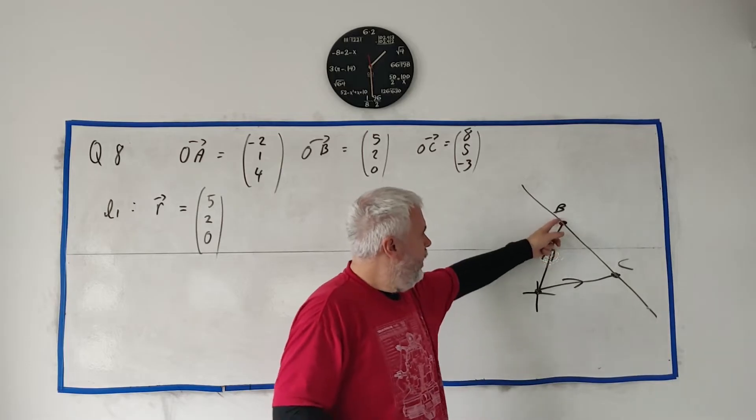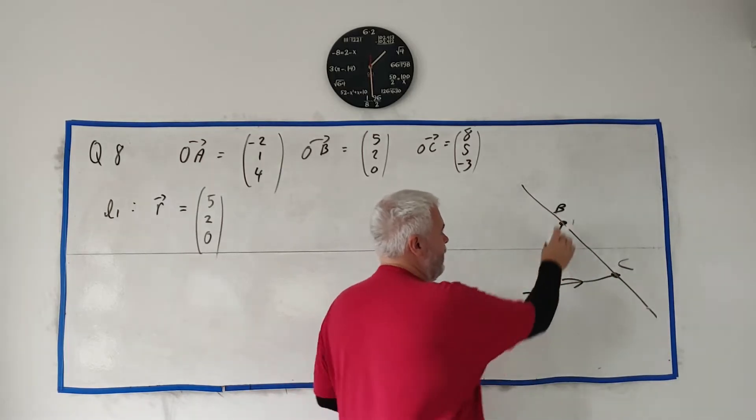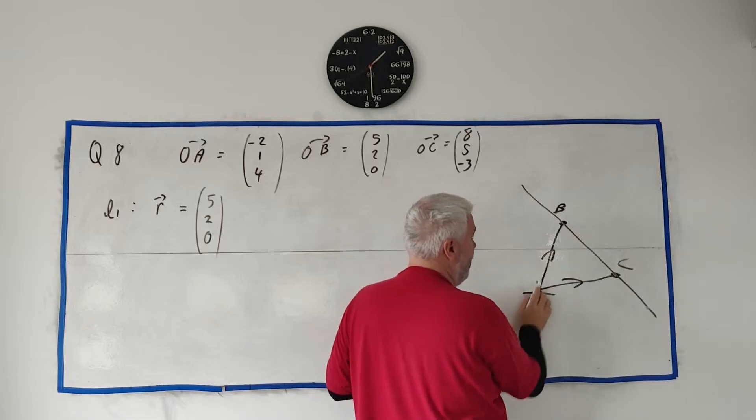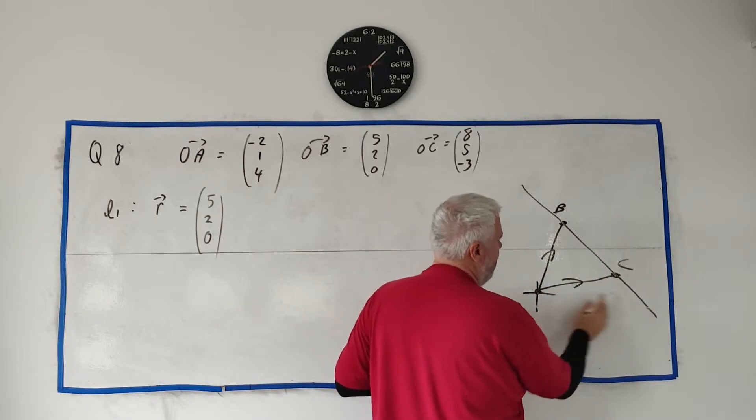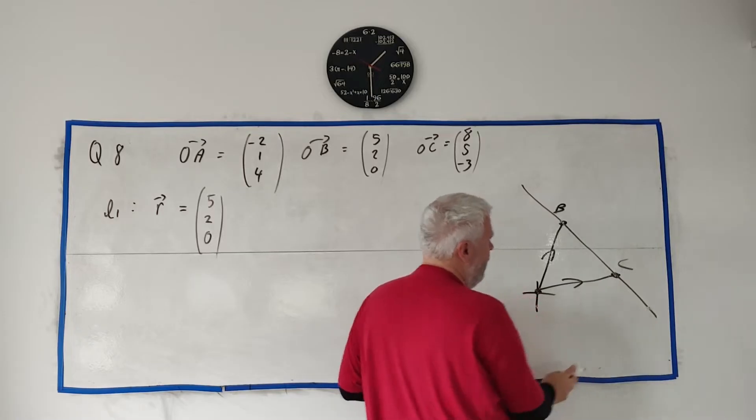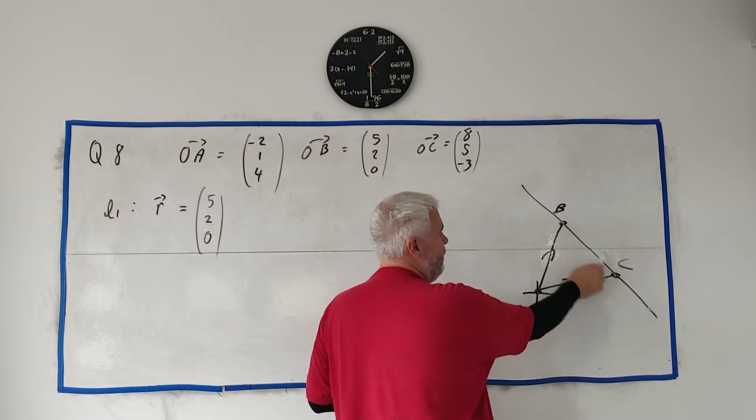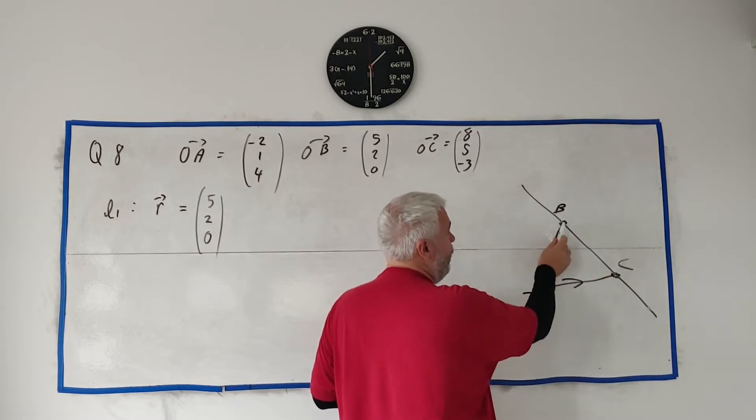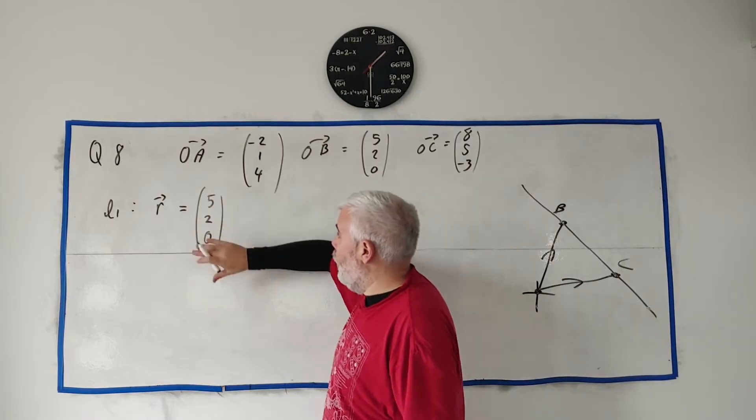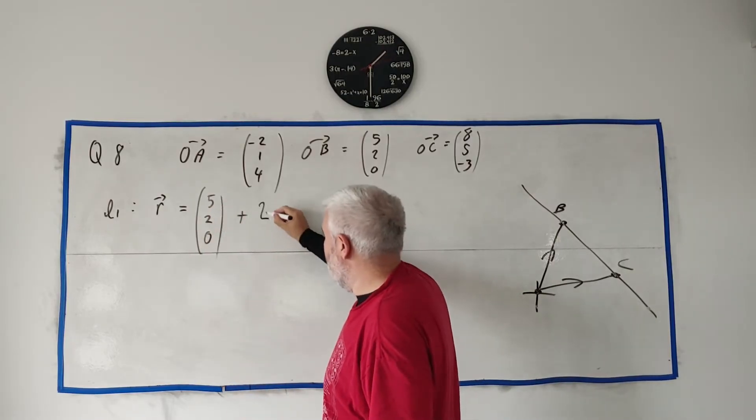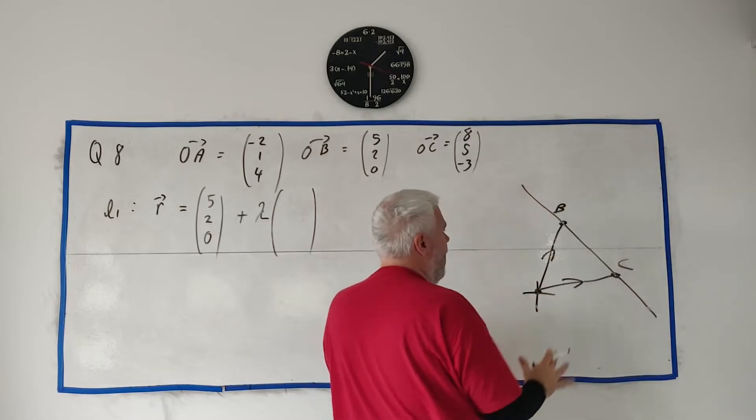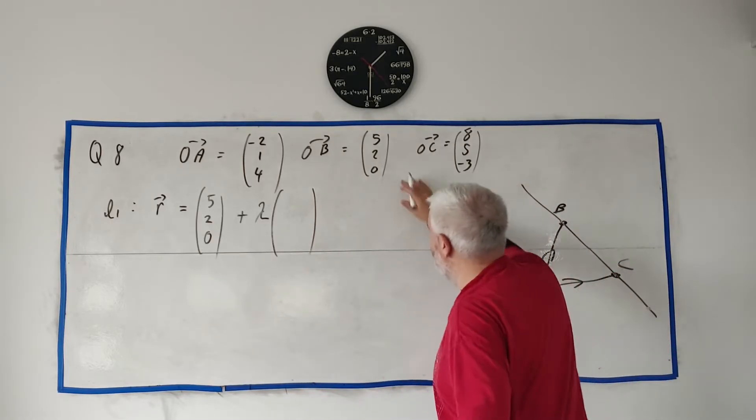What they've given us is 3 points. By the way, this is 3 dimensions, so I'm not going to be able to draw 3 dimensions perfectly. We're only interested in B and C for the moment. So they've given us the point B, that's this one here, and they've given us a point C. And they've told us about a line that goes between these two points. So how we define a line in vectors is we basically explain how to get to any point.